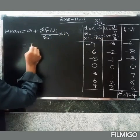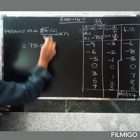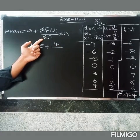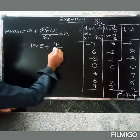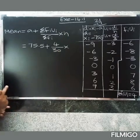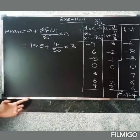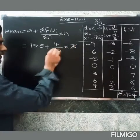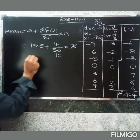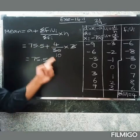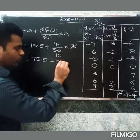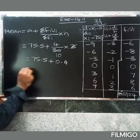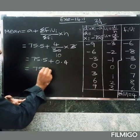So A equals 75.5, summation F·Ui equals 4, summation F equals 30, and h equals 3. So Mean equals 75.5 plus 4 divided by 30 into 3. That gives 75.5 plus 4 divided by 10, which equals 75.5 plus 0.4, giving a final answer of 75.9.